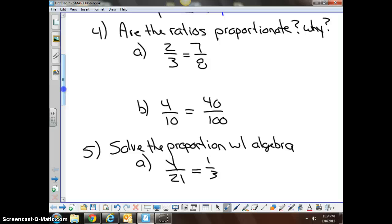I'm going to do cross products. Two times eight is going to give me 16, three times seven is going to give me 21, and you know that 21 and 16 are not equal, therefore we do not have these two ratios being proportionate. And this would answer your why. If you just did this work right here and show me the cross products, you have proven to me that two-thirds is not equal to the ratio of seven-eighths.